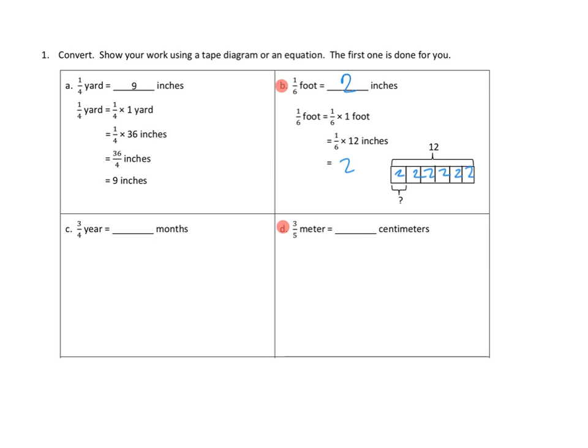Let's see if we can do the same thing with three-fifths of a meter. Three-fifths of a meter. So three-fifths of a meter is the same as three-fifths times one meter. All right, but we know we need to answer this question in centimeters, so let's go ahead and see if we can express that. Three-fifths times a hundred centimeters in a meter. Times a hundred centimeters.